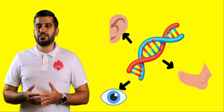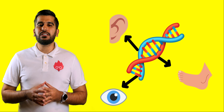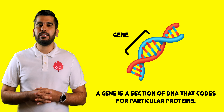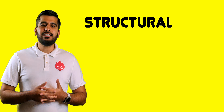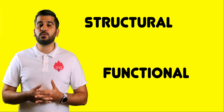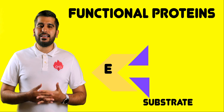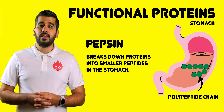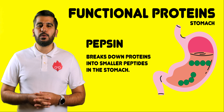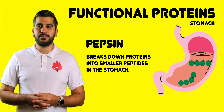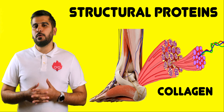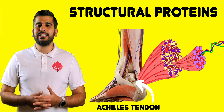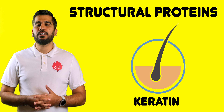Our DNA holds the instructions to make different structures important for keeping us alive. DNA is made of sections that code for particular proteins, called genes. Proteins have both structural and functional roles in our body, for example as enzymes which are biological catalysts that control biochemical reactions — examples include pepsin, which is responsible for breaking down proteins — or as structural proteins such as collagen, which makes up tendons and ligaments, and keratin, the major component of hair.